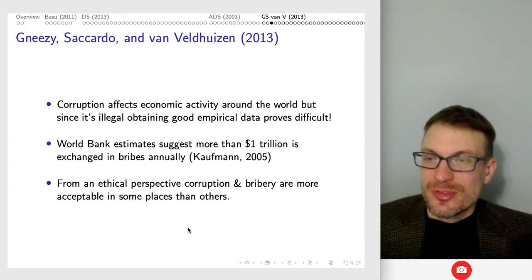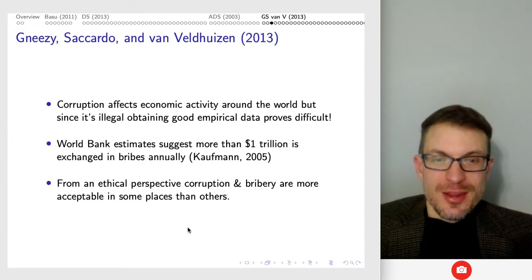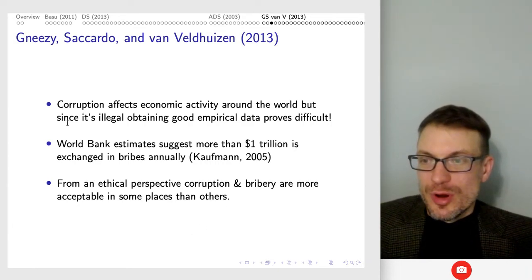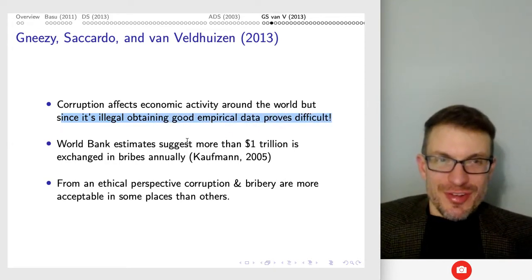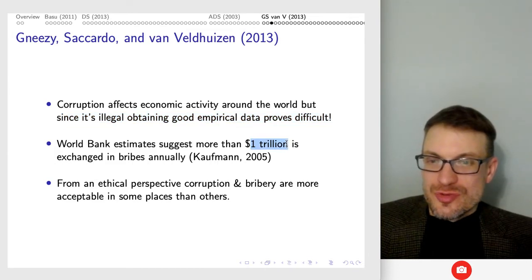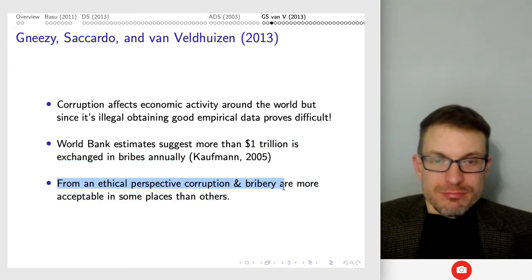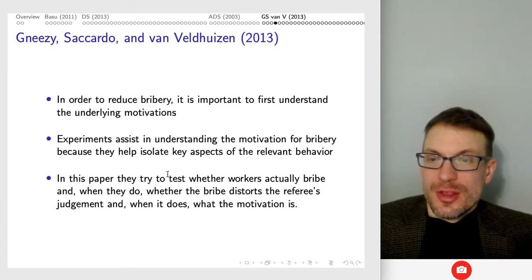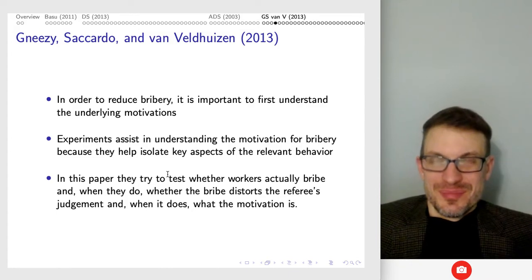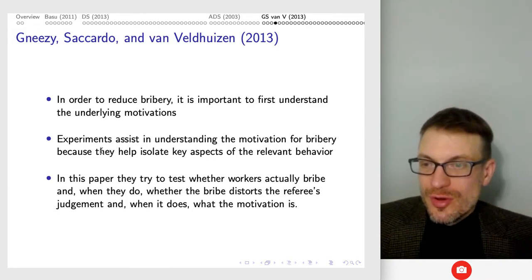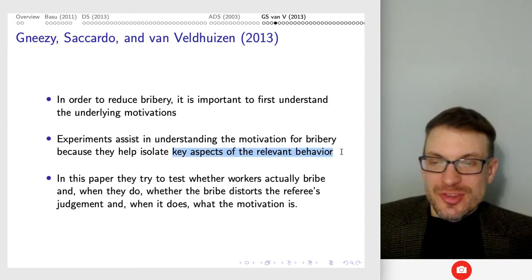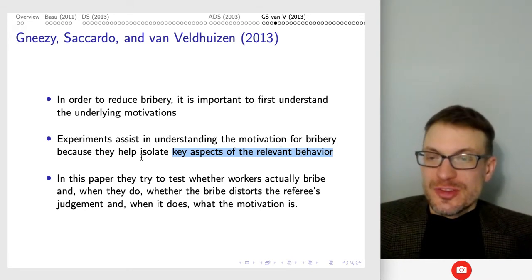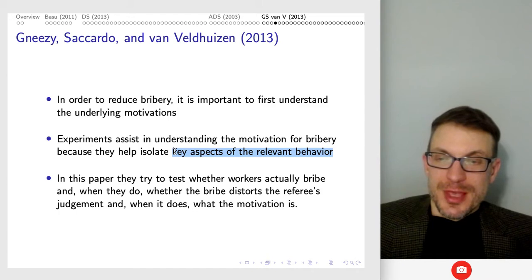The paper shows participants in the laboratory are easy to corrupt and the mechanism is greed, not reciprocity. They're able to separate out the motivations through different treatments. The motivation for studying this is that corruption is bad and significant — it affects a lot of economic activity around the world. Since it's illegal, obtaining good empirical data is difficult. World Bank estimates something like a trillion dollars exchanged in bribes. From an ethical perspective, corruption and bribery are more acceptable in some parts of the world than others, and to reduce bribery we want to understand the underlying motivations.